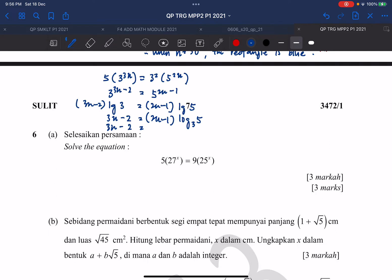So you should get 2 times log 3, 5, you should get 2.930x minus log 3, 5. Log 3, 5, you should get 1.465. So you move the 2.930 to the left-hand side, you should get 3 minus 2.93, you should get 0.07x equals to.